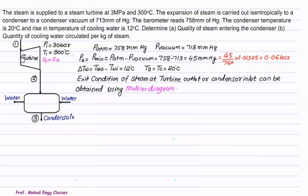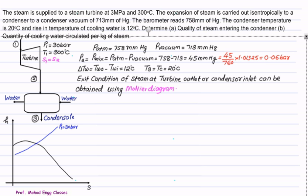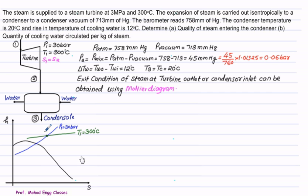Since the turbine expansion is isentropic, we use the Mollier diagram (H-S plot) to determine the steam condition. Using the isentropic condition S1 = S2, we locate the intersection of the 30 bar line and 300°C on the Mollier diagram and label it point 1. Since the process is isentropic, we draw a vertical line from point 1 until it intersects the condenser pressure of 0.06 bar.